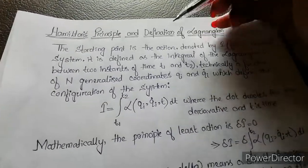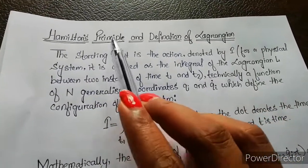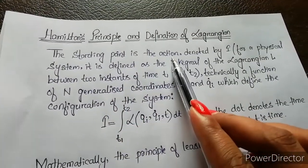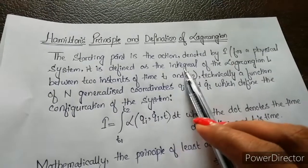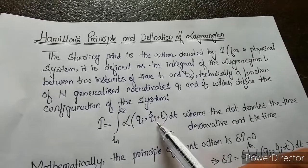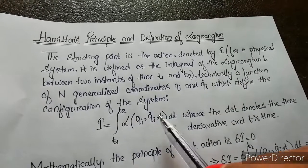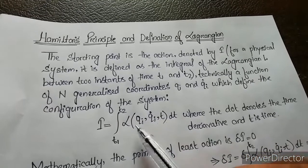We'll discuss Hamilton's principle and the definition of the Lagrangian using Hamilton's principle. First, we start with the action for a physical system. The action is defined as the integral of the Lagrangian L, which is a function of qi, qi dot, and t. Here, dot represents the time derivative, t is the time.